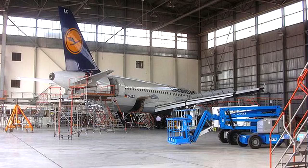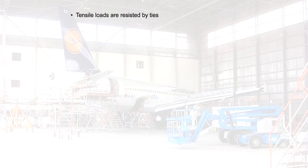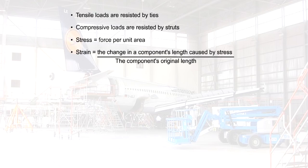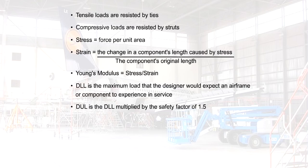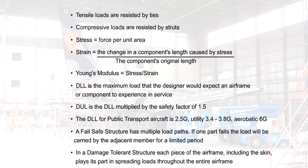This is the end of the lesson. You should now know that tensile loads are resisted by ties, that compressive loads are resisted by struts, and the meaning of the terms stress and strain. You should know the meaning of the term Young's modulus of elasticity. And you should also understand the relationship between design limit load and design ultimate load and the safety factor. You should also know what the design limit load is for various types of aircraft. And finally, you should understand the properties of fail safe and damage tolerant structures.